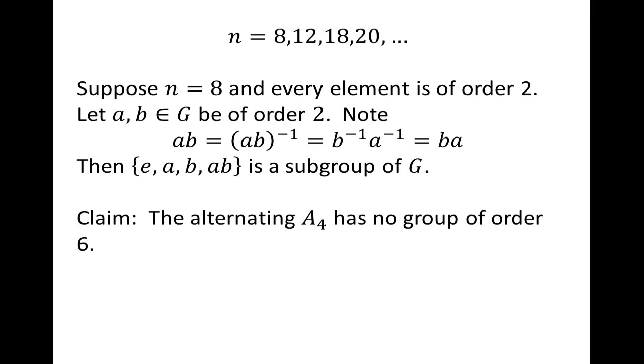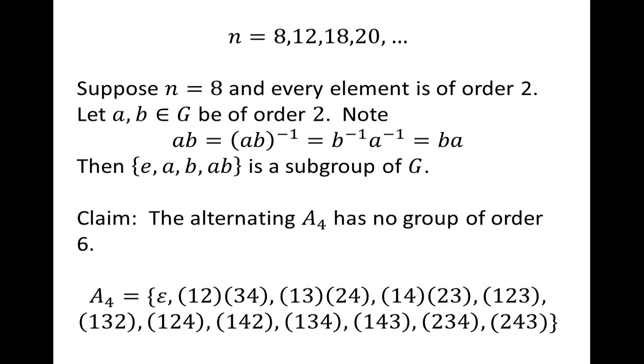So now we're down to 12, and I claim that 12 is the first special one we have to worry about. The alternating group A_4 has no subgroup of order 6. So a quick reminder of what A_4 is. It consists of these 12 elements. It's a group of permutations. These are the even permutations from S_4. Even means that if I write them as a product of 2-cycles, I get an even number of 2-cycles. And we're going to show why this has no subgroup of order 6.